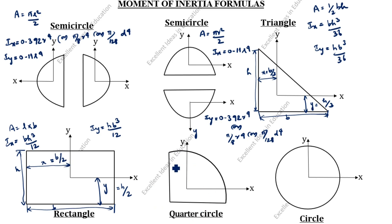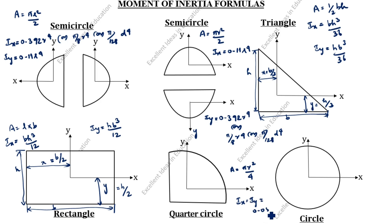Next, we will see quarter circle. What is the area of quarter circle formula? A is equal to pi r square by 4. What is the moment of inertia of quarter circle? Ix is equal to Iy is equal to 0.055 r power 4. How will you calculate this distance? This is y. This is x. Y is equal to 4r by 3 pi. x is equal to 4r by 3 pi.